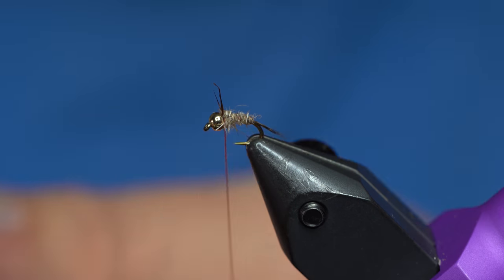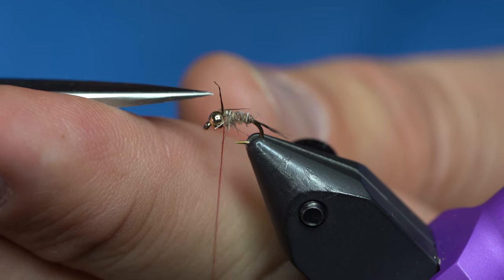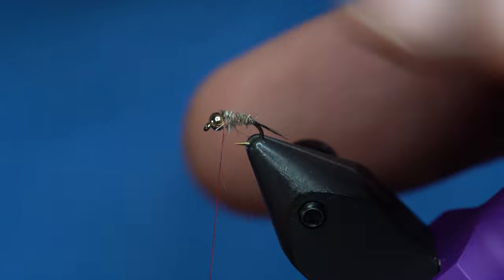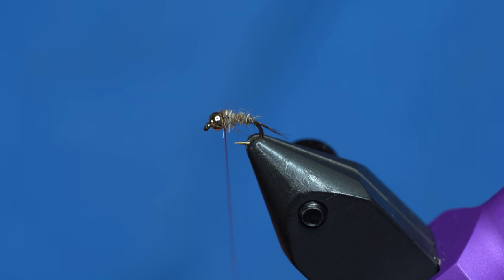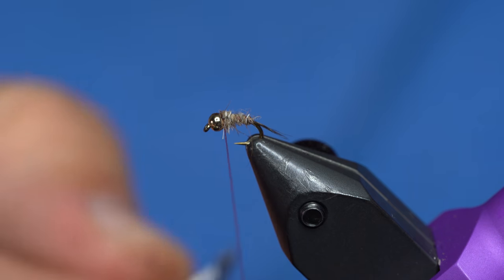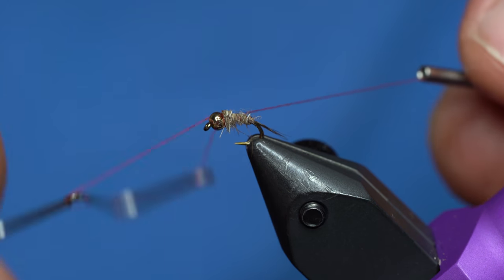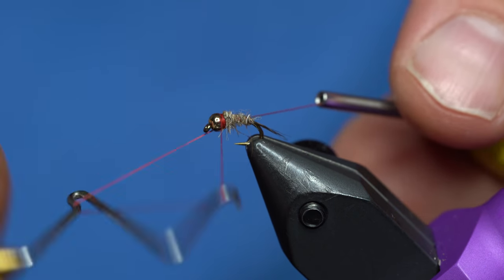As you can see, I've got a little bit of guard hair going on here, we'll just trim those off. And then at the head, when you whip finish it, just leave a little bit of a red hot spot there.